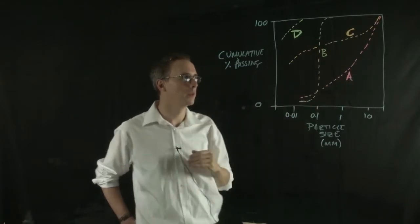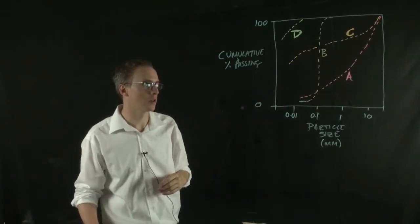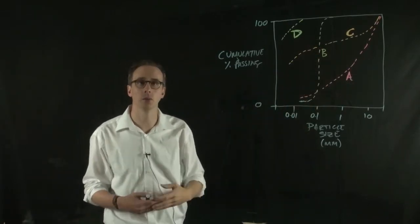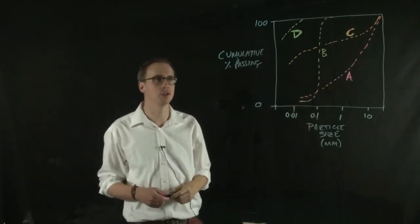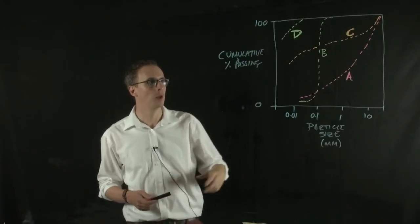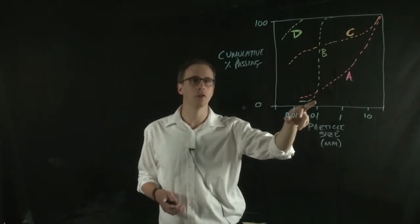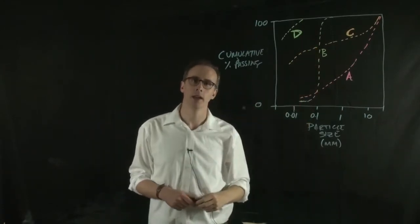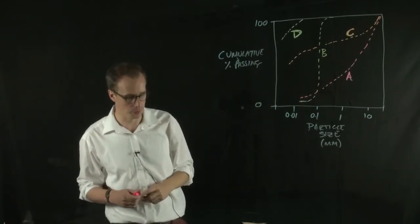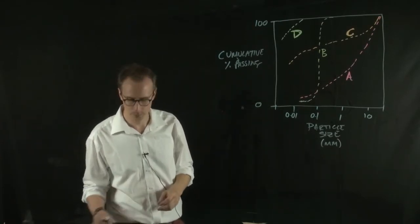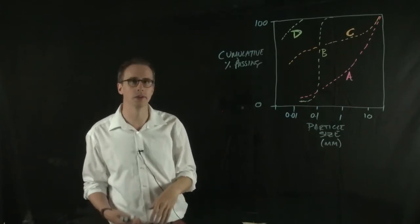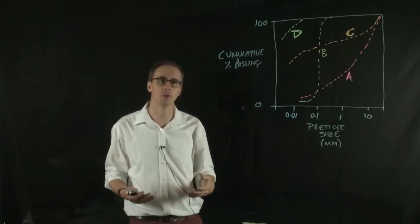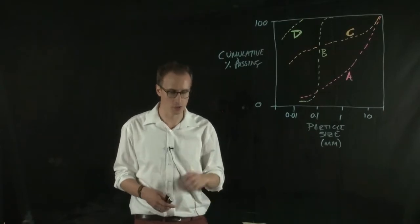Line A, for instance, you might describe as something that's well graded. Well graded means that there's a wide range of particle size distribution. Whereas something that's more uniformly graded, like line B, we describe that as uniformly graded. Now there's a rule for whether we describe something as uniformly graded or well graded, and I'll talk about that in a second.